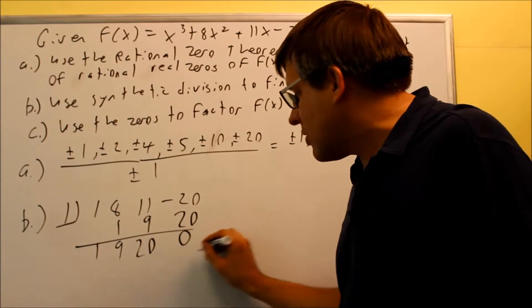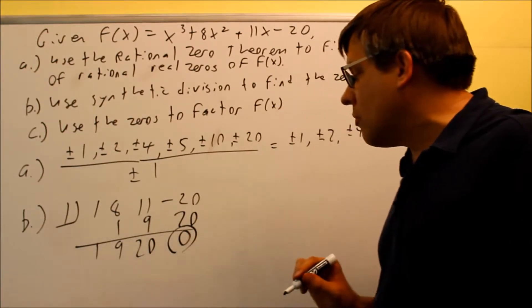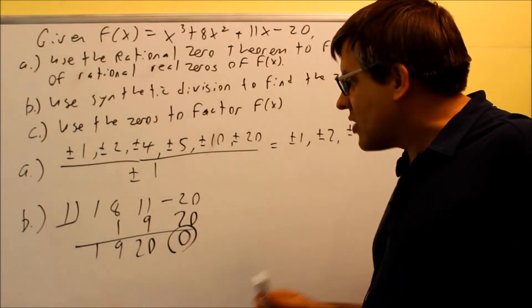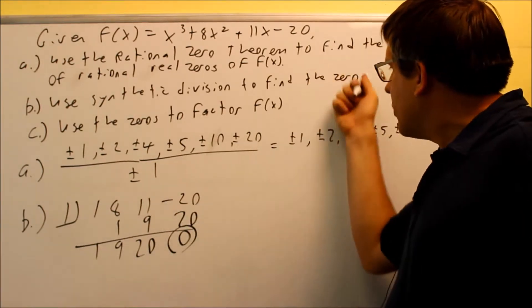Okay so that tells me because I get a remainder of zero, the remainder theorem says that that definitely will be an x-intercept. It's one of my zeros.